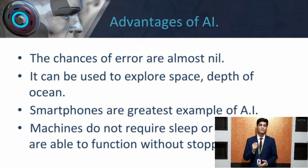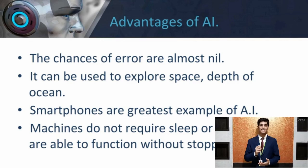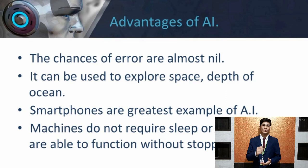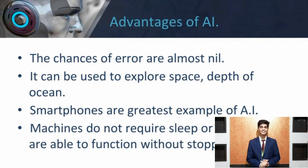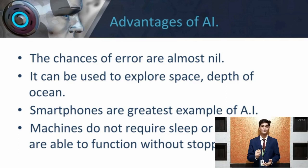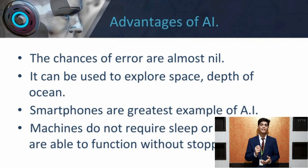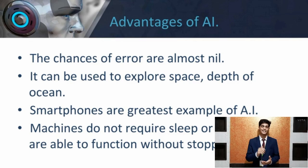Our next point is that AI can be used to explore space and the depths of the ocean. The biggest advantage of AI is that it can do the riskiest things for us — whether it be going to Mars, diffusing a bomb, exploring the deepest part of the ocean, or mining for coal and oil. It can be used effectively in any kind of natural or man-made disaster. Our next point is that smartphones are a great example of AI. AI is taking center stage in smartphones, going far beyond apps like digital assistants. Apple, Samsung, and Huawei have all introduced smartphones with powerful AI chips which can perform trillions of operations per second while using significantly less power.